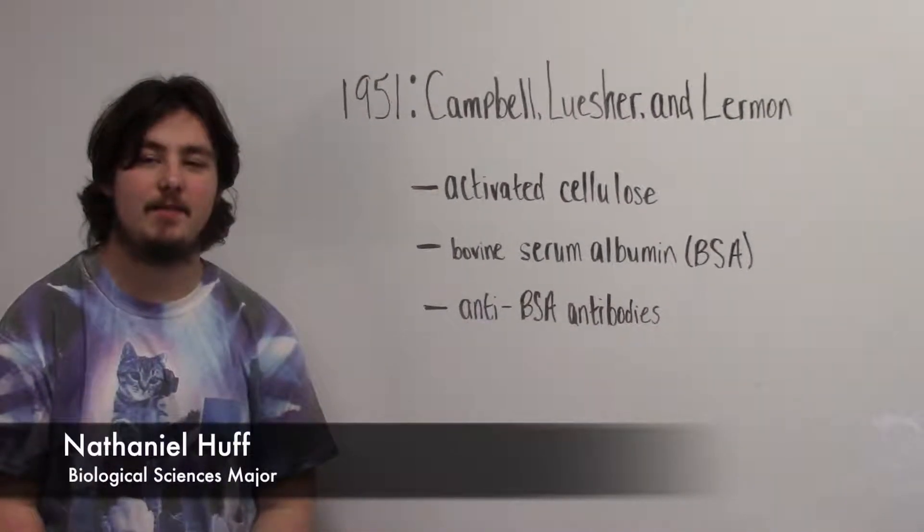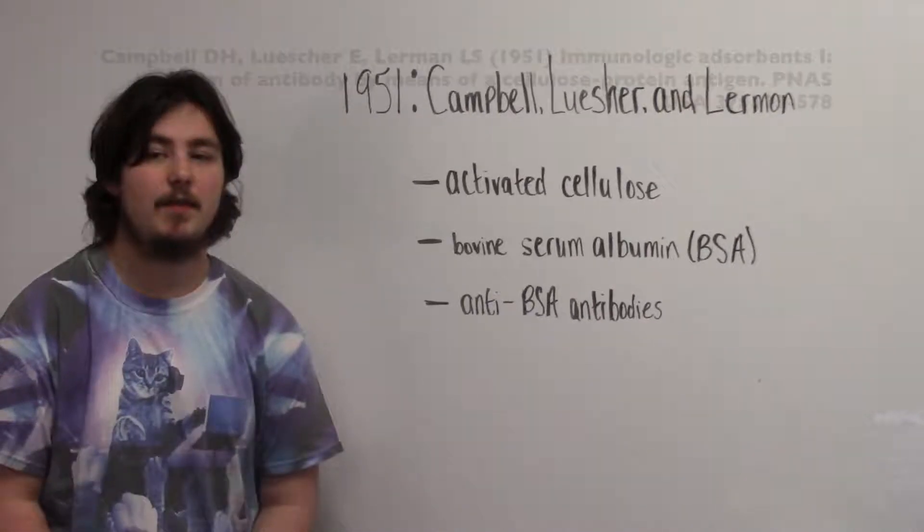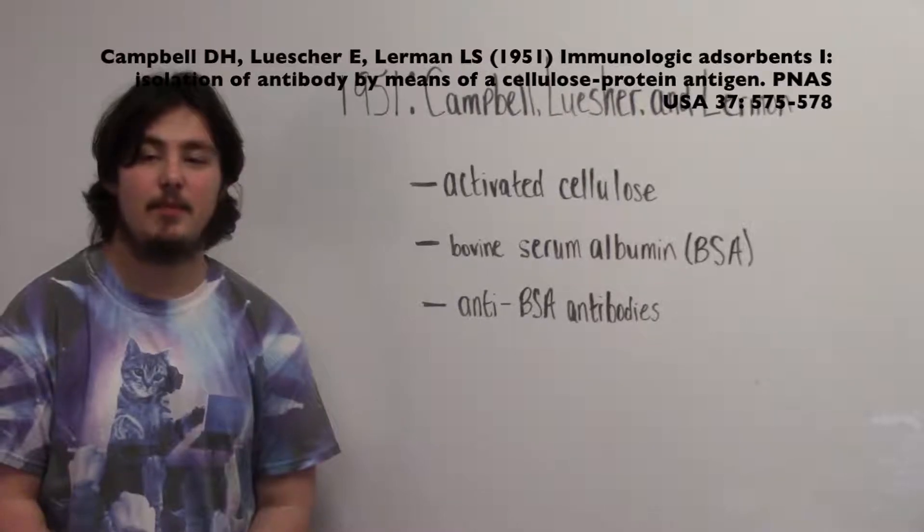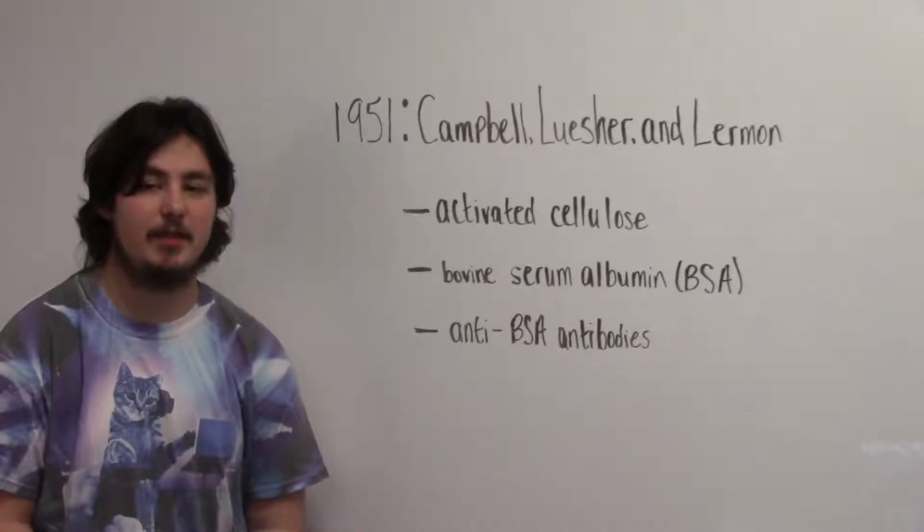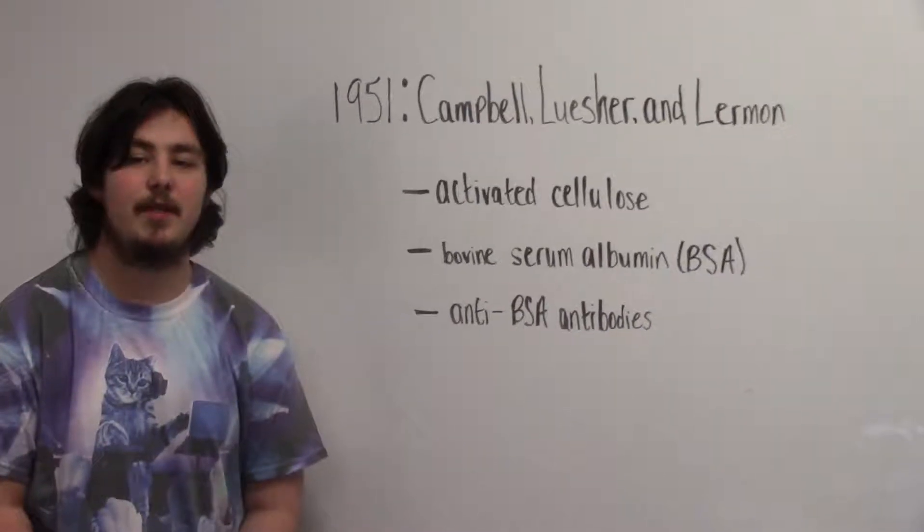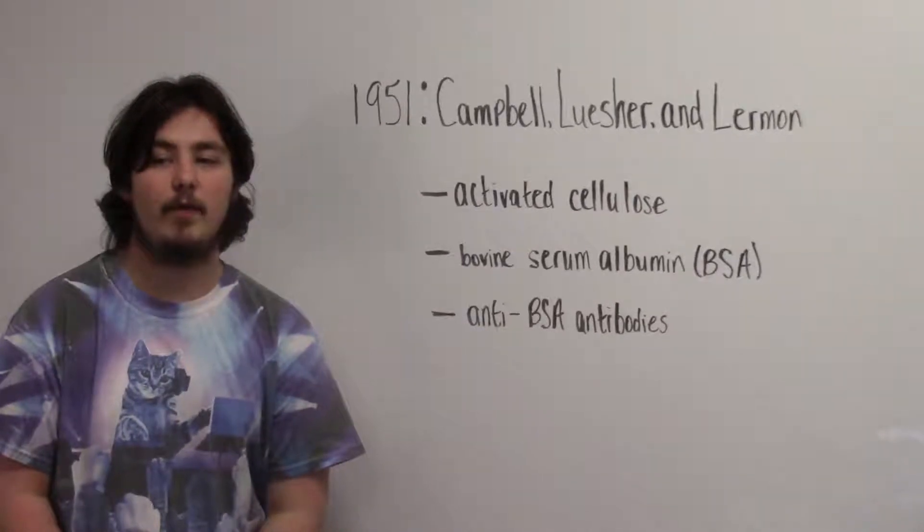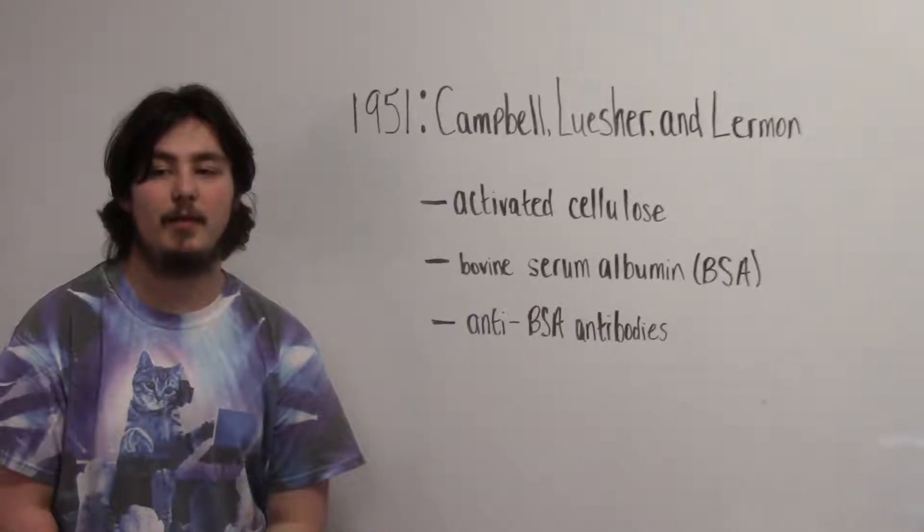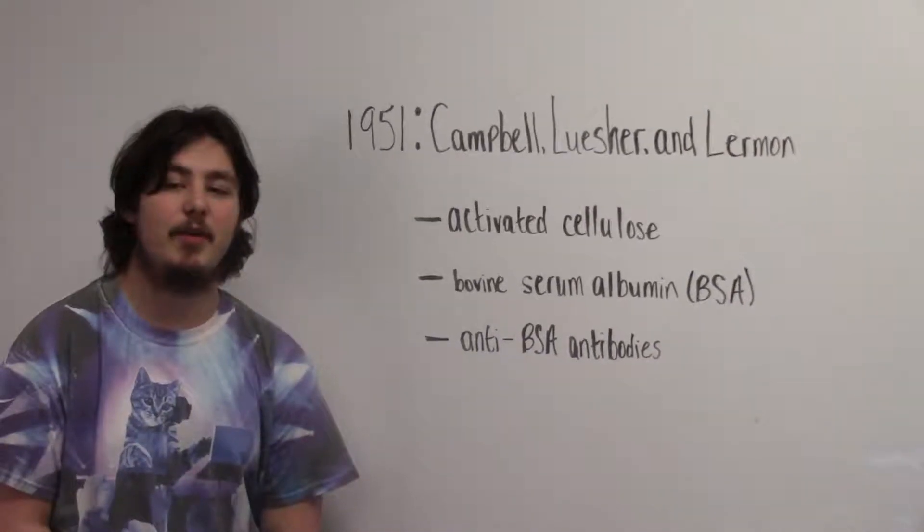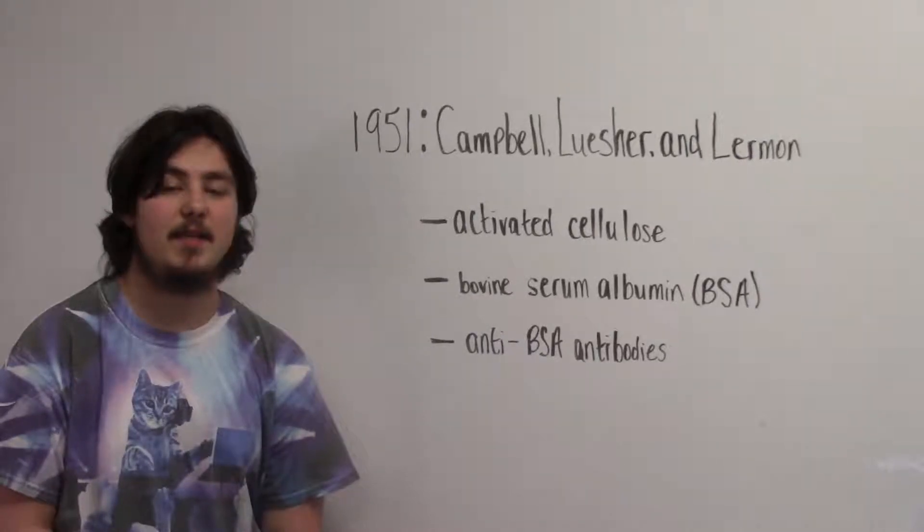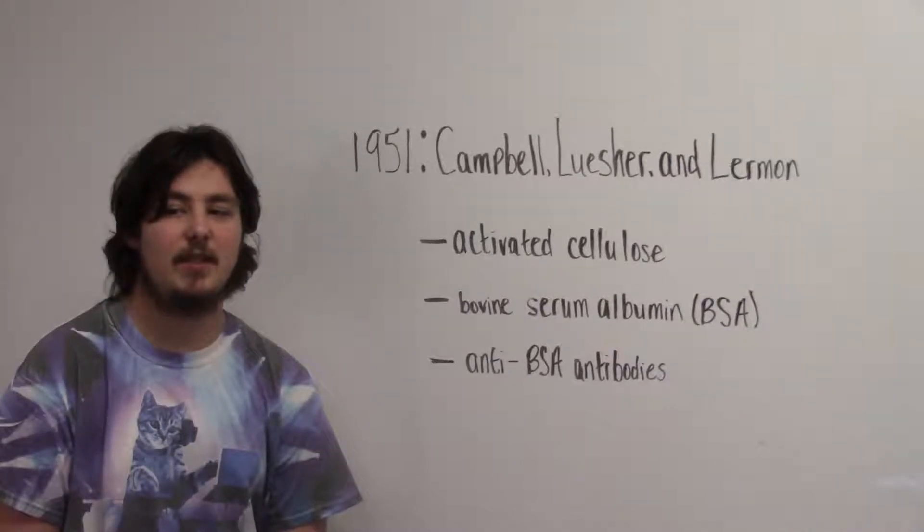As the next two decades passed by, a major issue arose with the support of what we know as the matrix. Though the support was easy to prepare, the binding properties were not long term due to the gradual loss of the binding agent. A critical advancement took place in 1951 when Campbell, Luescher, and Lerman immobilized bovine serum albumin, or BSA, through an activated form of cellulose. With their results, they were able to isolate anti-BSA antibodies in a serum sample from rabbits that had previously been injected and immunized with BSA.